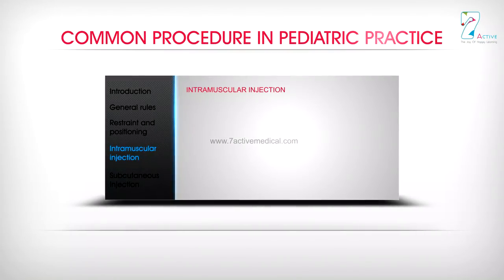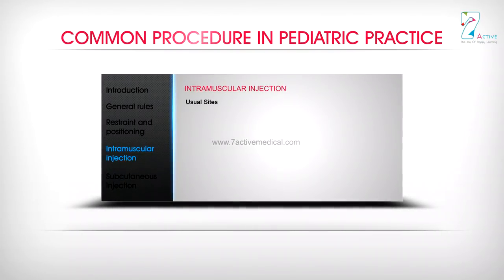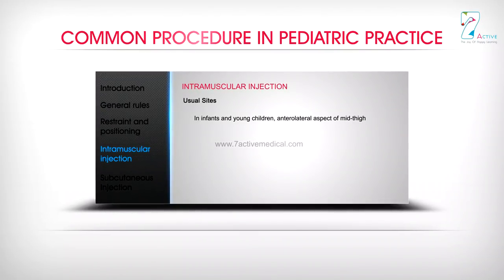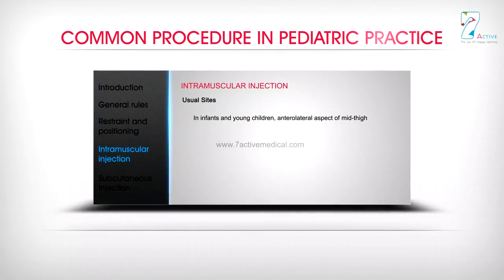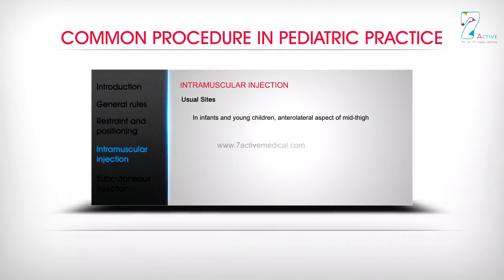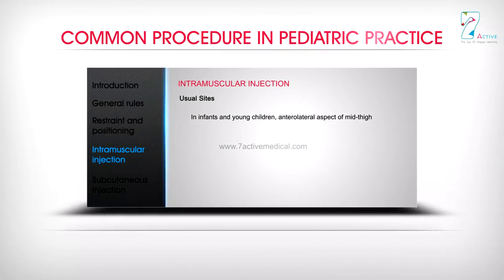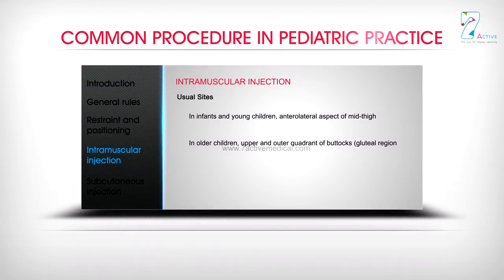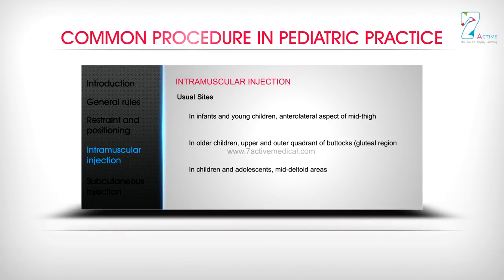Intramuscular injection — usual sites: In infants and young children, the anterolateral aspect of the mid-thigh. In older children, the upper and outer quadrant of the buttocks, gluteal region. In children and adolescents, the mid-deltoid area.